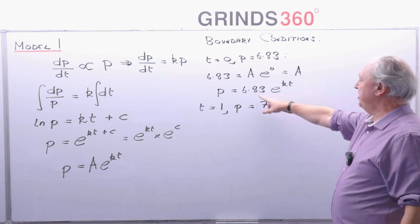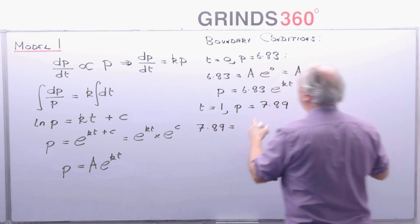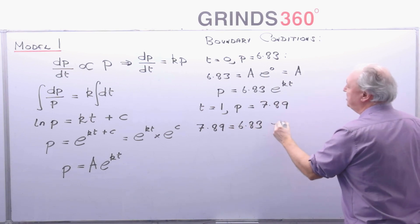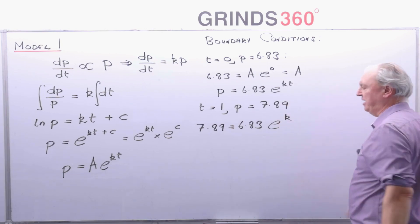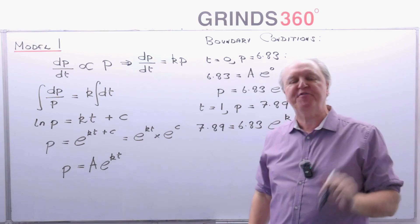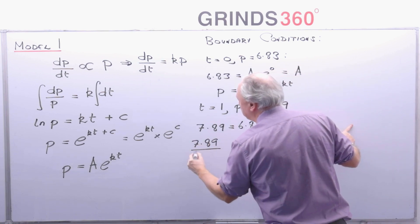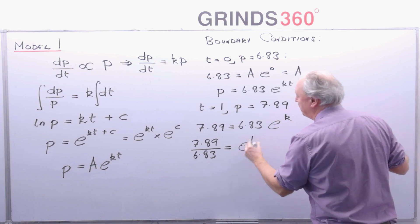So let's put it in here. p is 7.89. That's equal to 6.83 by e to the power of k. So I'm going to solve that for k. So 7.89 divided by 6.83 is equal to e to the power of k.